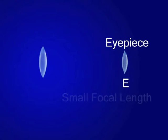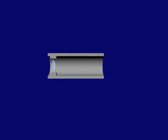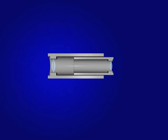The eyepiece has a small focal length and small aperture. The two lenses are mounted coaxially at the free ends of the two tubes. The distance between these lenses can be adjusted using a rack and pinion arrangement.